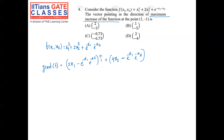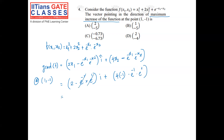Evaluating the gradient at the point (1, -1): the i-component gives 2(1) - e^(-1)·e^(1) = 2 - 1 = 1, and the j-component gives 4(-1) - e^(-1)·e^(1) = -4 - 1 = -5. So the gradient is i - 5j, which corresponds to the vector (1, -5). Looking at the options, option B is correct.